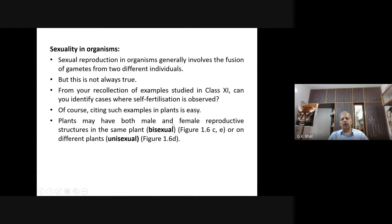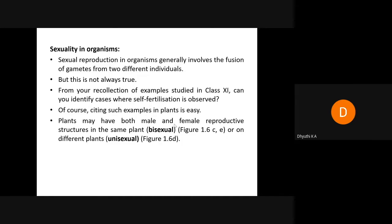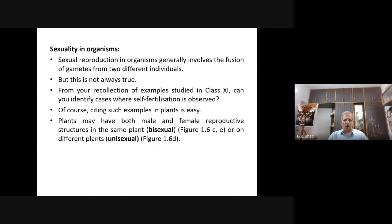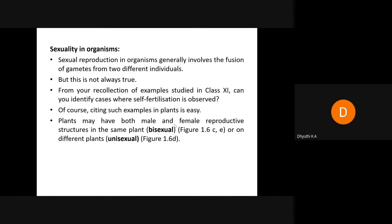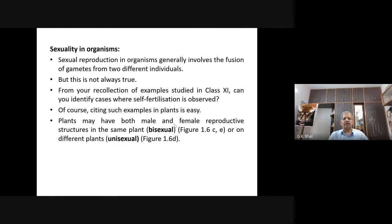Plants may have both male and female reproductive structures in the same plant. What do you call them? Apart from bisexual, the term is monoecious. Bisexual is also called monoecious. In both animals and plants, they are called hermaphrodites. When sexes are different — male and female are separate organisms — they are called unisexual or dioecious. D for different: dioecious means sexes are different, not in the same animal.